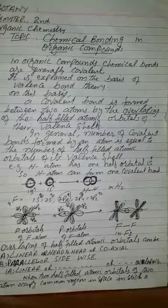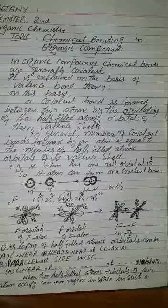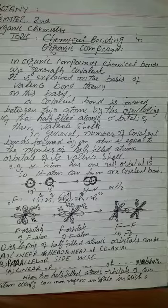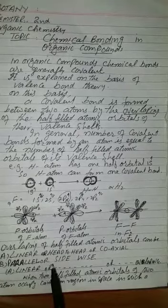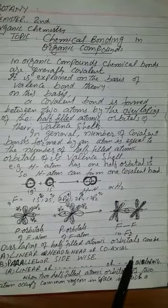Overlapping of atomic orbitals can take place in two ways. Number one, linear or head-to-head or coaxial overlapping. Number two.